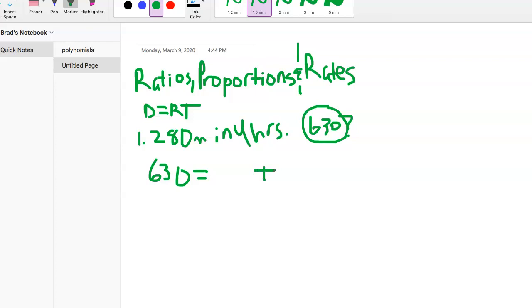As far as rate is concerned, they told us it was 280 miles in four hours. So that equals 70. They're going 70 miles an hour.